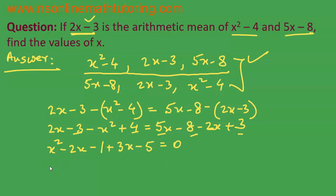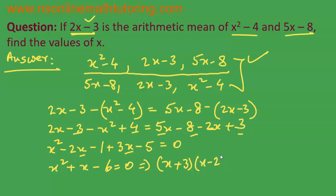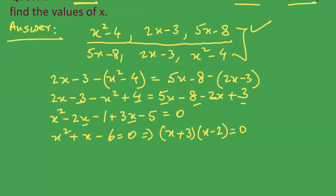So we get x squared plus x minus 6 equals 0. We factorize this quadratic expression: it is (x plus 3)(x minus 2) equals 0. Therefore the values of x are either x equals negative 3 or x equals positive 2.